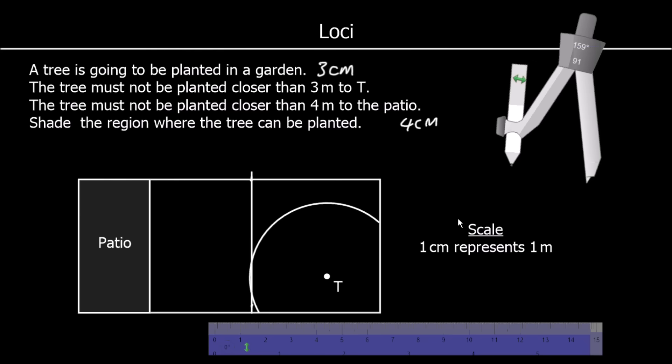So where can the tree be planted? It can't be within 4 centimeters to the patio. It can't be within 3 centimeters of T. So it can be anywhere else. So that's our answer.